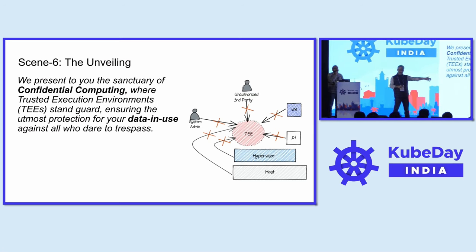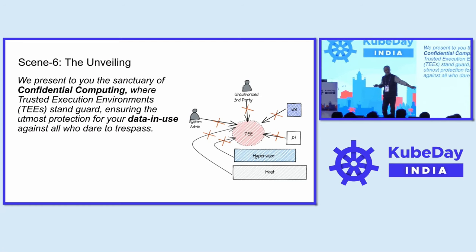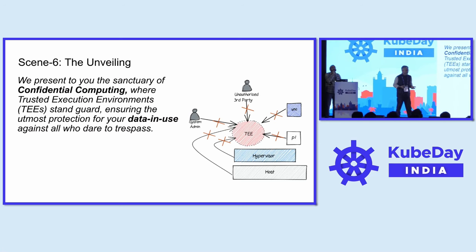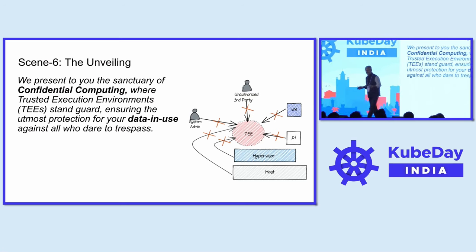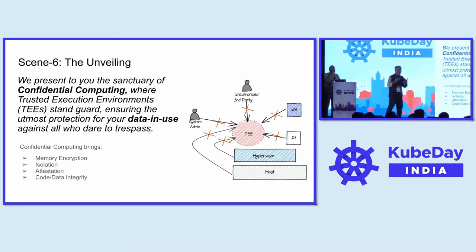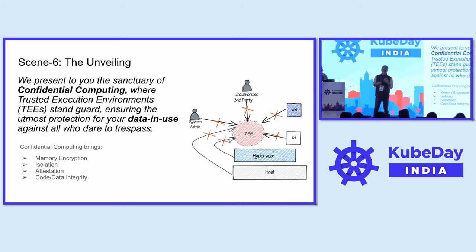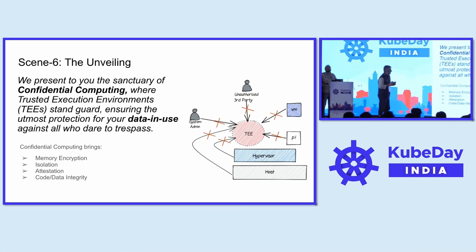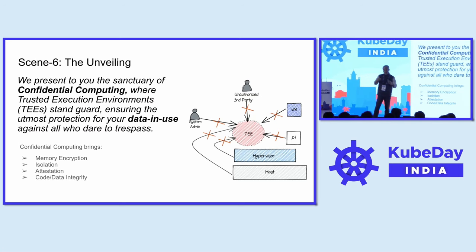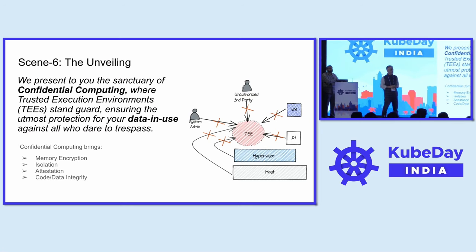In fact, even if your cluster admin or infrastructure admin does a memory dump, what they get is garbage — not plain text. So it provides memory encryption, which is one of the foundational technologies that confidential computing provides. It also provides isolation and attestation. I want to spend a few minutes on attestation, which is one of the fundamental properties of confidential computing. As a user or model owner, how can I trust the environment on which my IP is deployed? How can I technically trust what a provider claims about their infrastructure?